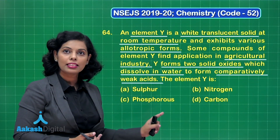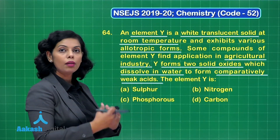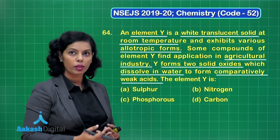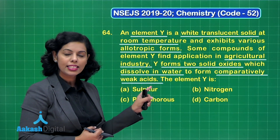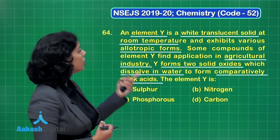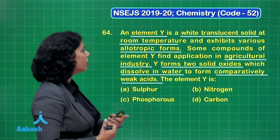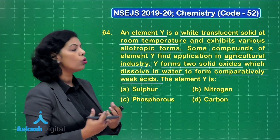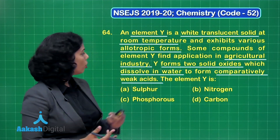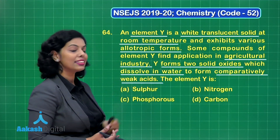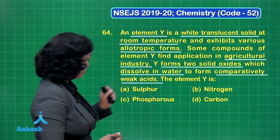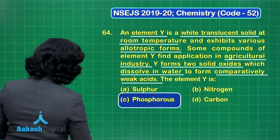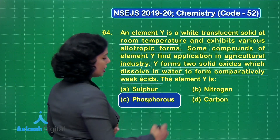On the basis of this, phosphorus can be the correct answer. Phosphorus is a white translucent solid at room temperature — correct. It exhibits various allotropic forms: red phosphorus, white phosphorus, and black phosphorus. Some compounds also have applications in the agricultural industry. Phosphorus forms two oxides, P4O6 and P4O10, which dissolve in water to form weak acids.